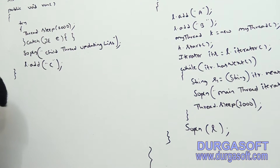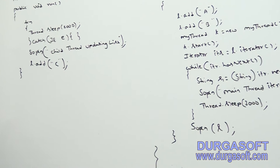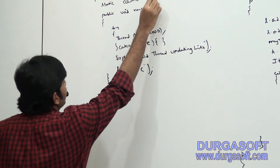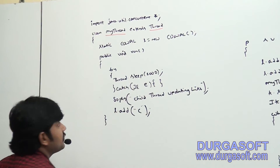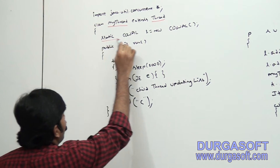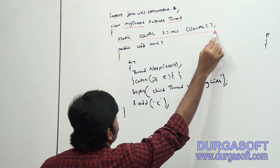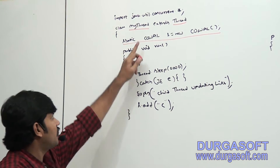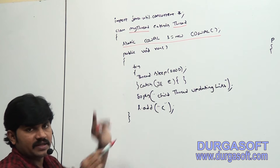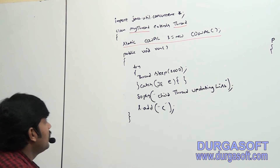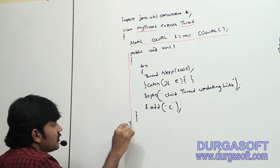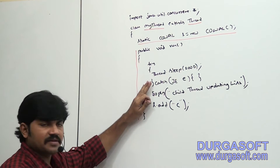What I am doing in this example? Very simple. We have a class MyThread that extends Thread. I created one CopyOnWriteArrayList object — static, so it can be accessed from anywhere. The run method contains the job of the child thread.